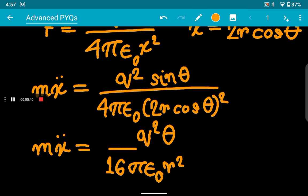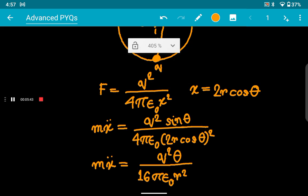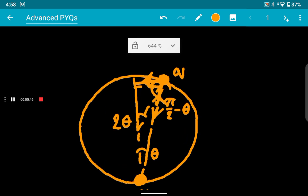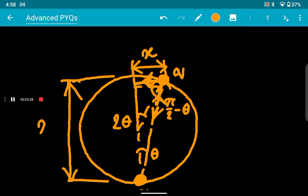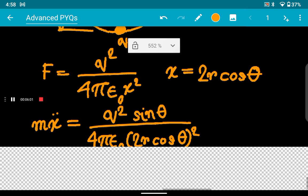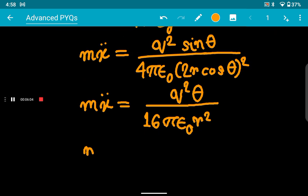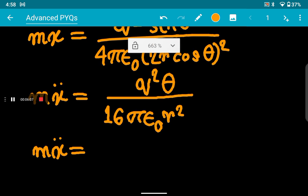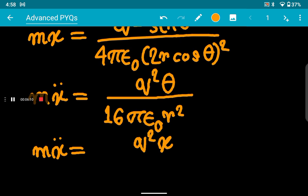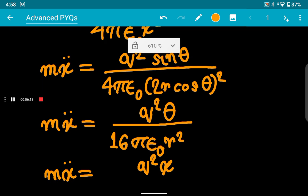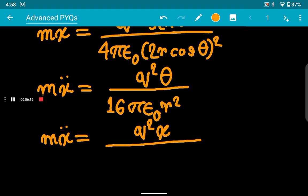Now what is theta? This was theta and this is the displacement, this is x. This is 2r, this is the diameter, so θ is nothing but x divided by 2r. So you may write that this is q²x. Actually, you could have replaced sin θ from right here—sin θ is almost equal to tan θ, so anyway you will get θ equals x/2r.